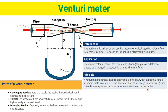A Venturimeter has three parts. First is the converging section, which acts as a nozzle, increasing fluid velocity and decreasing the pressure. Next is the throat — the section with the smallest diameter where the fluid velocity is highest and pressure is lowest. Then the diverging section gradually increases the fluid pressure back towards its original value.